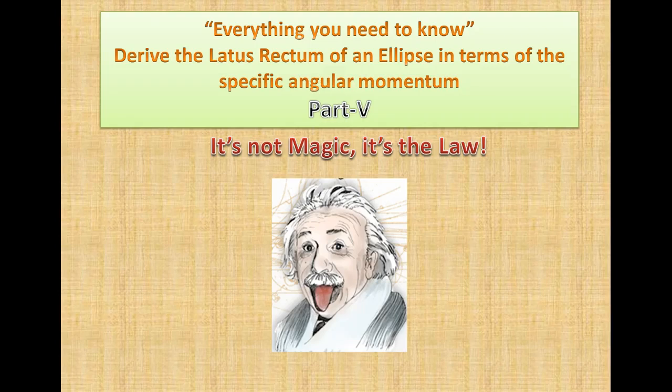Here we are at part 5. We're going to derive the latus rectum of an ellipse in terms of the specific angular momentum. The reason we're doing all of these is because in part 7, we're going to solve some problems — some rocket problems and an asteroid problem. An asteroid that's about to take out the Earth, and we've got to determine if it's going to destroy Earth or pass by.